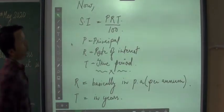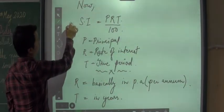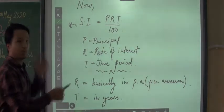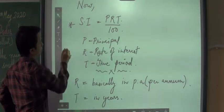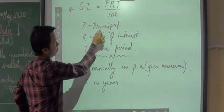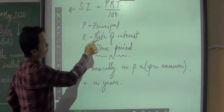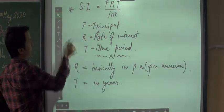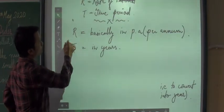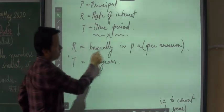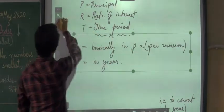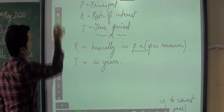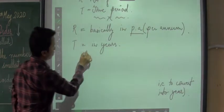Now we come to the main formula for simple interest: SI = PRT / 100. Here, P is the principal (the sum of money borrowed or lent), R is the rate of interest, and T is the time period — for how many years it has been lent or borrowed. The rate of interest R is basically per annum, meaning the rate of interest is calculated annually.